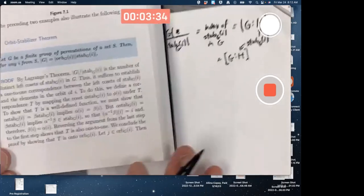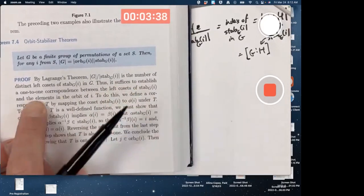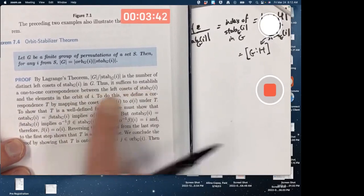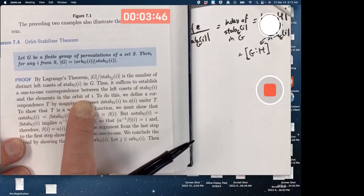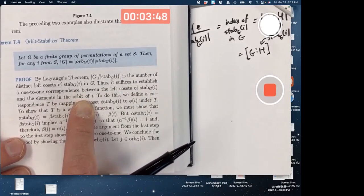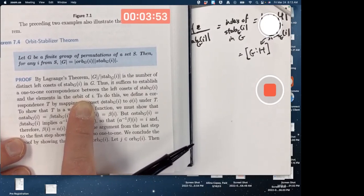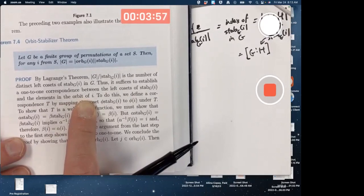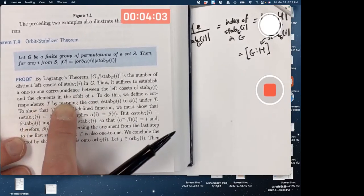So because of that, it suffices, it's good enough, to establish a one-to-one correspondence between the left cosets of the stabilizer and the elements of the orbit. Doesn't say that that one-to-one correspondence is isomorphism. I mean, the orbit's not necessarily even a group. Typically, it's not a group.